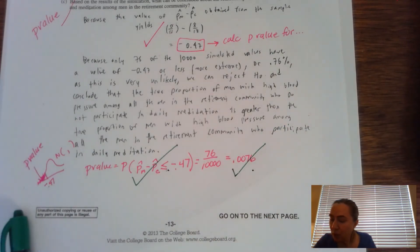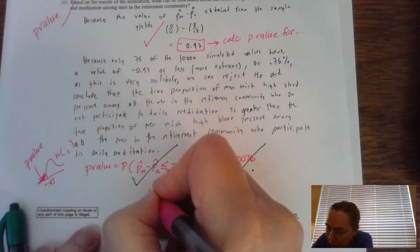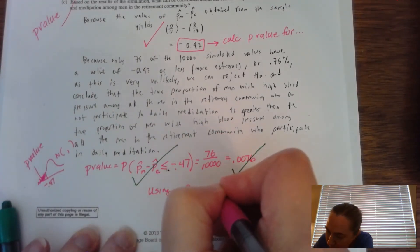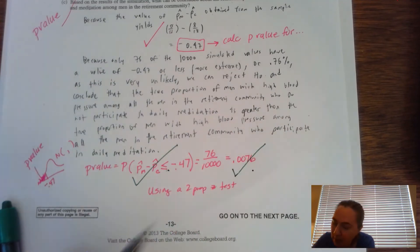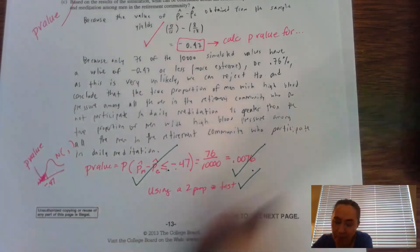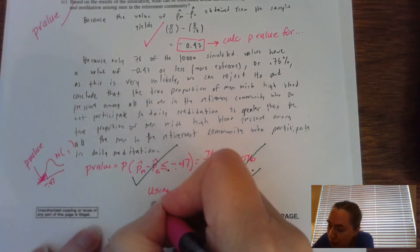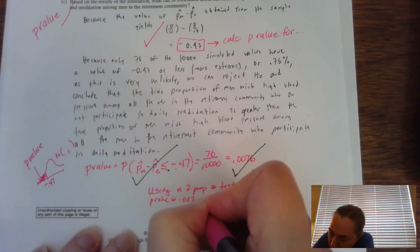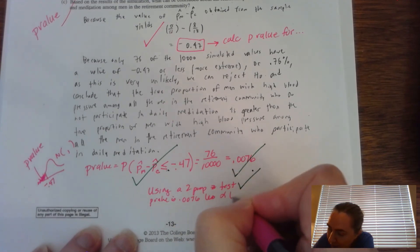So in the conclusion, what I'd like to see is using a two proportion Z test, make sure you have a check for that. Make sure you state your P value is 0.0076 and that is less than the alpha level of 0.05.